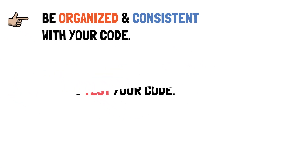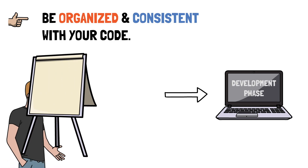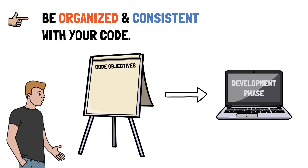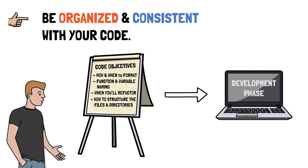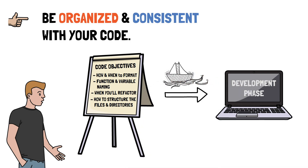The first rule refers to the fact that before starting a new project, whether you're working on a team or alone, you should set your own code objectives — like how you'll format the code, how you're going to name functions and variables, when you're going to refactor the code, how you're going to structure your files and directories inside the root of your project, etc. This might seem like an obvious step, but believe me, it's overlooked many times. Just grab a piece of paper and make a simple plan on how you're going to write your code. It's going to save you tons of time when developing a huge project in the long run.